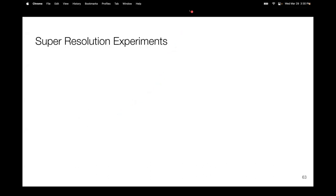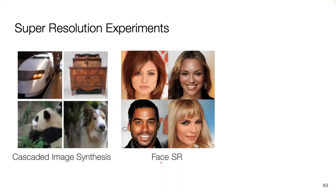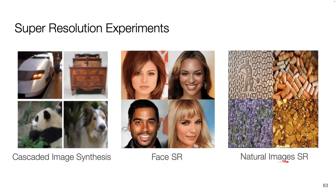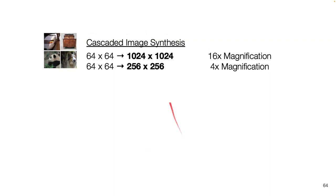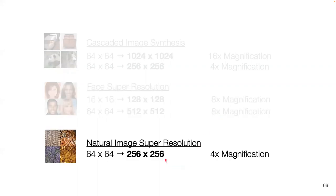SR3 is successful across a couple of different experimental categories. The authors experiment with cascaded image synthesis, face super resolution, and natural image super resolution. For cascaded image synthesis, they perform a 16-times magnification followed by a four-times magnification. For face super resolution, they perform two tasks of eight-times magnification. For natural image super resolution, they test a four-times magnification task.